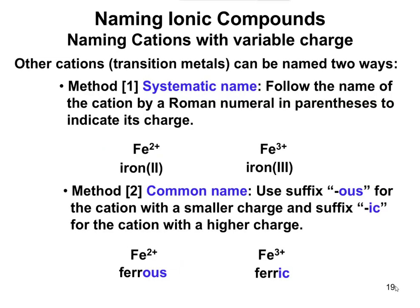Naming gets a little trickier with transition metals, because transition metals can have a variable charge. We need a different way to name them so we know what the actual charge is. There are two methods: the systematic way and the common way. We're not going to worry about the common name — I just want to mention it briefly. The systematic name is much easier: you name the metal, like iron, and then use a Roman numeral in parentheses to indicate the charge.